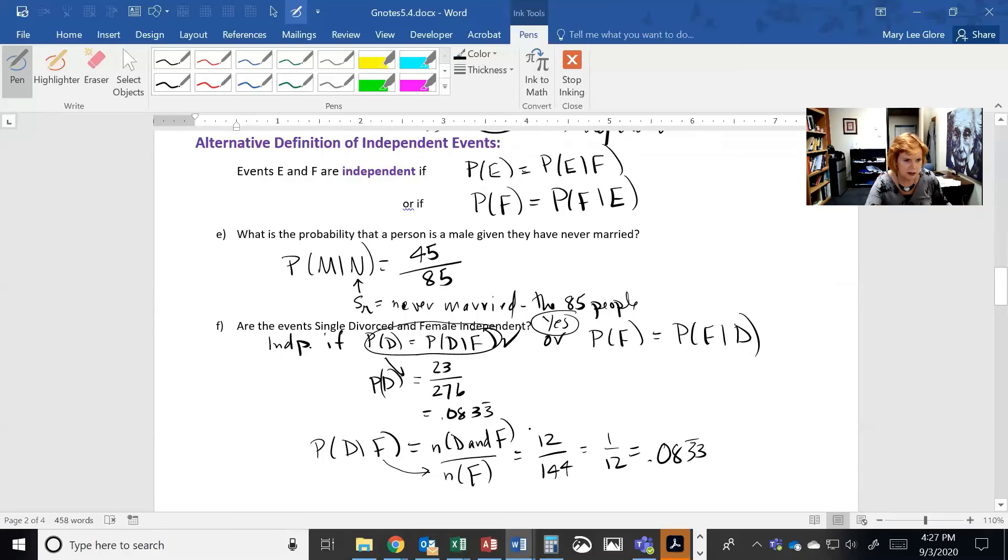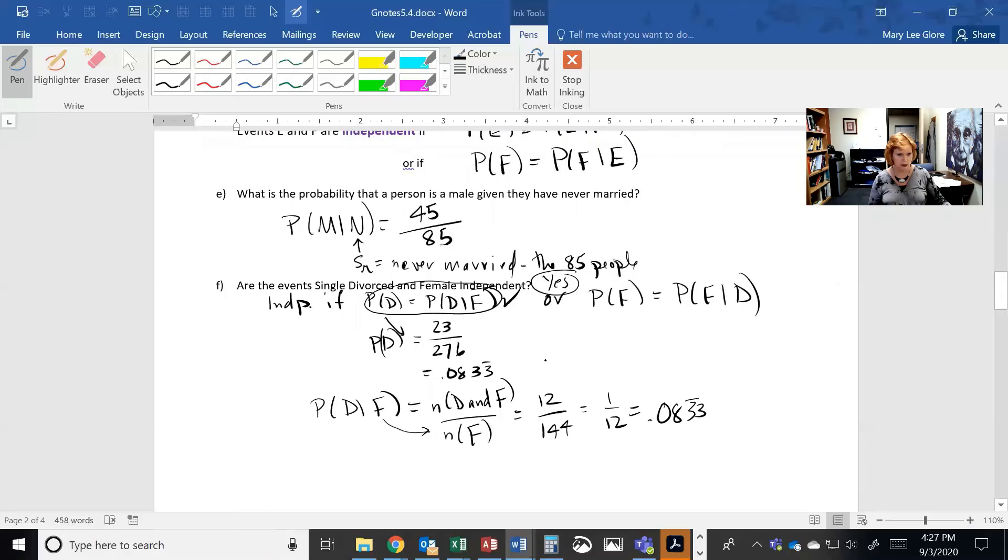So basically this 0.0833, a twelfth of all people. So around 8%. So 8% of all people divorced. And down here, I have 8% of females are divorced. And there's only one other category, and we'd also find that 8% of males are divorced.